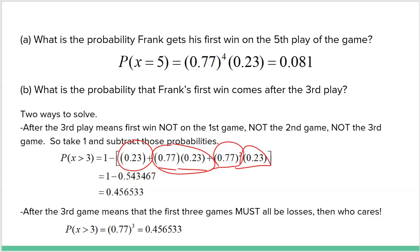There's actually a second, easier way to solve this. If Frank wants his first win after the third game, that simply means the first three games must all be losses. After that, we don't care what happens. So: 0.77 × 0.77 × 0.77 = (0.77)³ ≈ 0.4565. Same answer, much easier math — though some students find it harder to conceptually understand why this works.